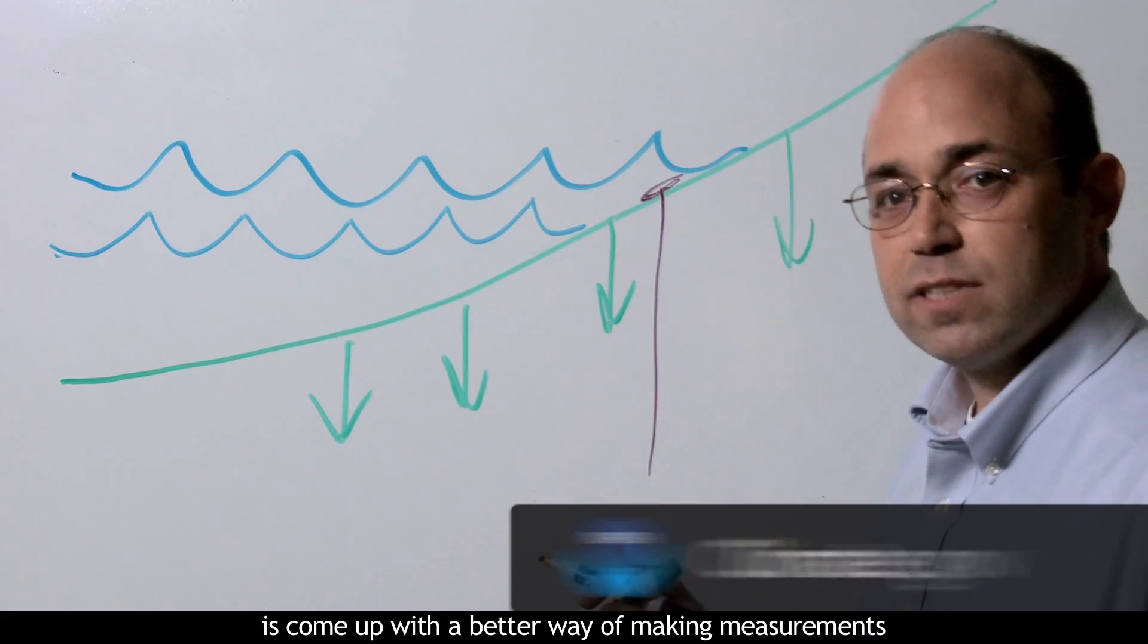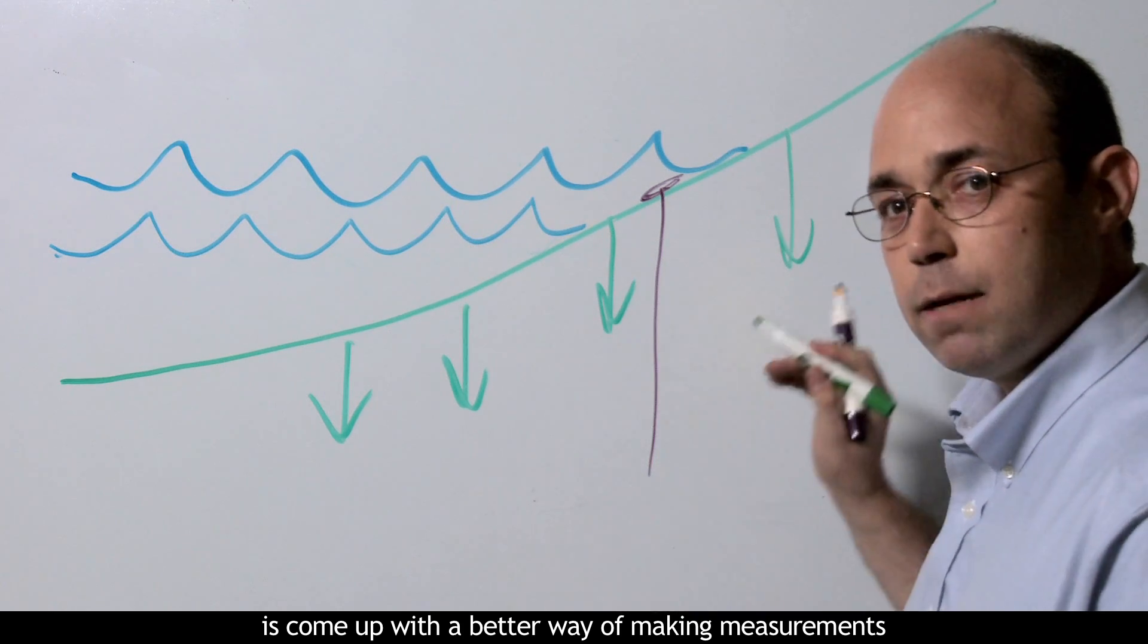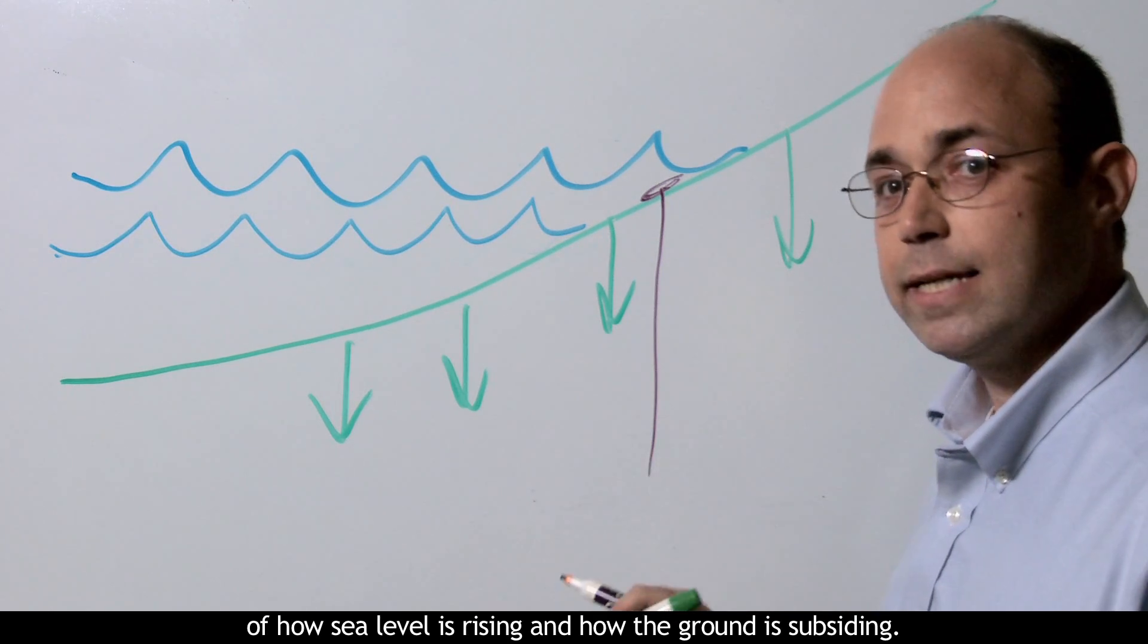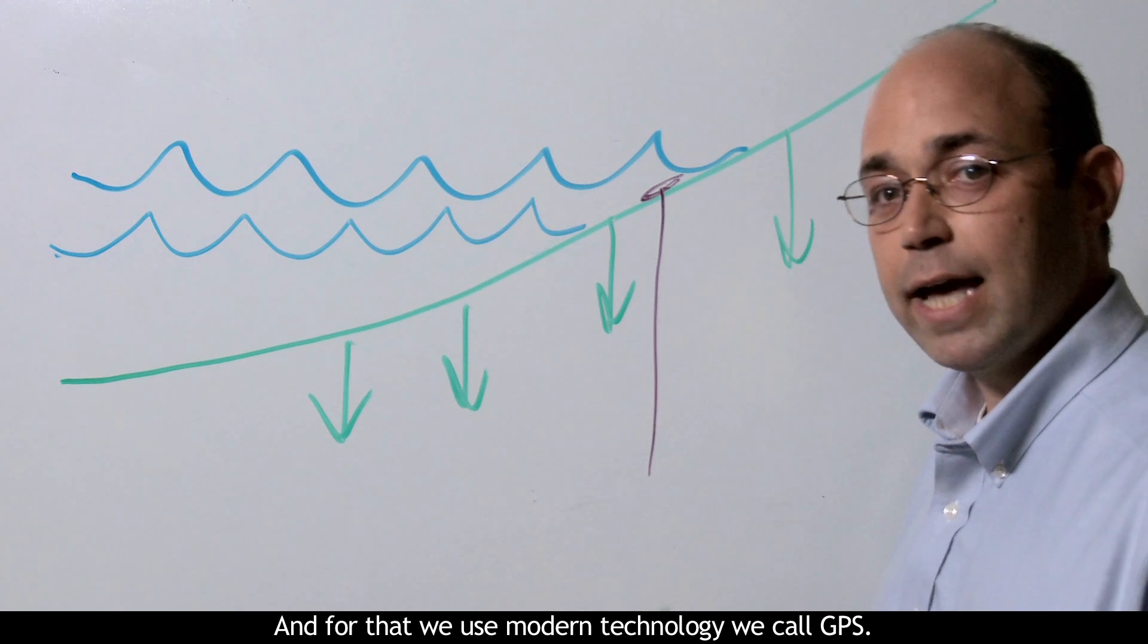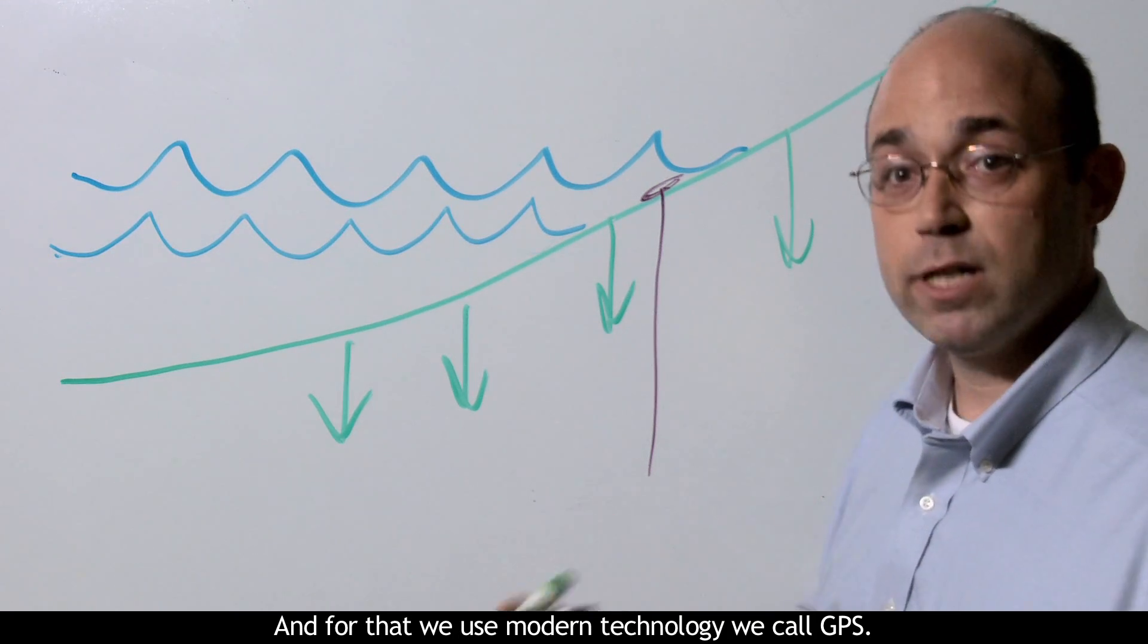So what we have to do is come up with a better way of making measurements of how sea level is rising and how the ground is subsiding. And for that, we use modern technology we call GPS.